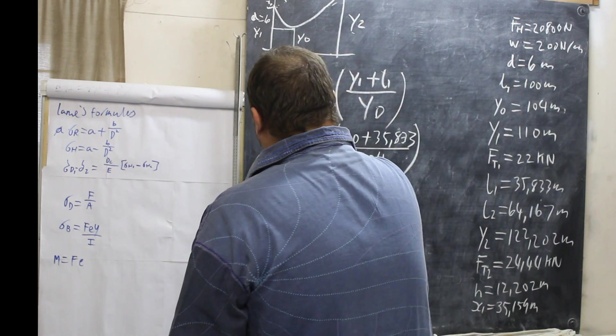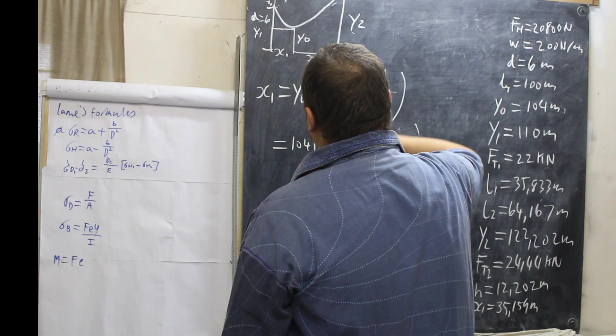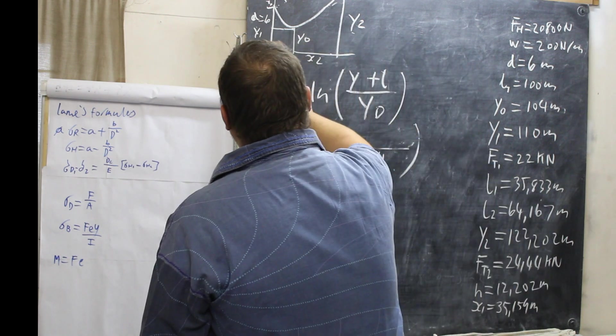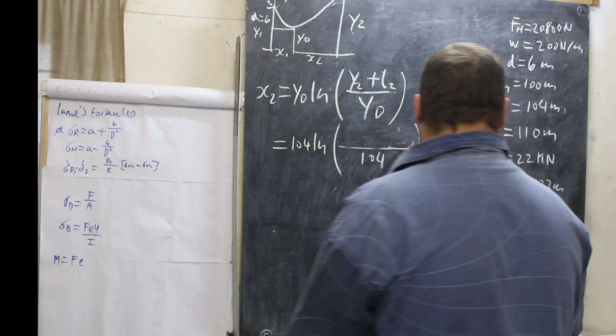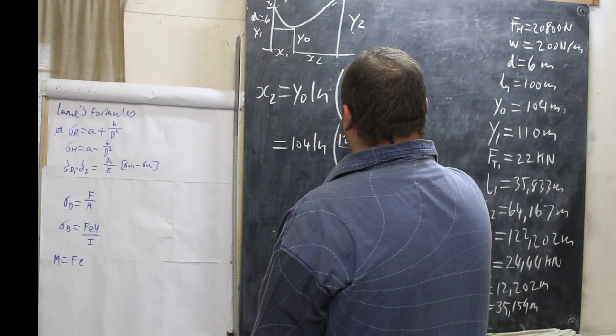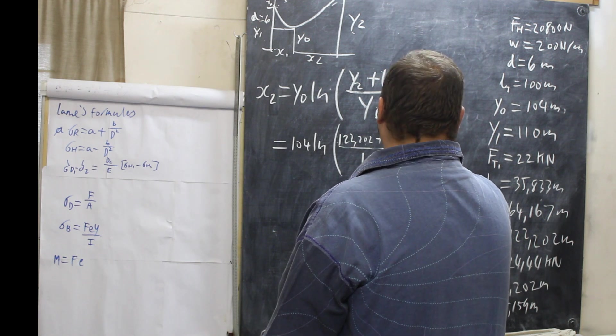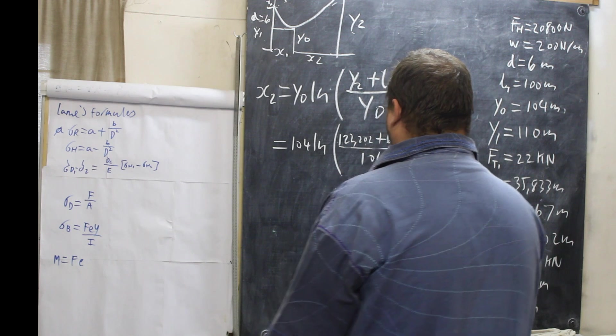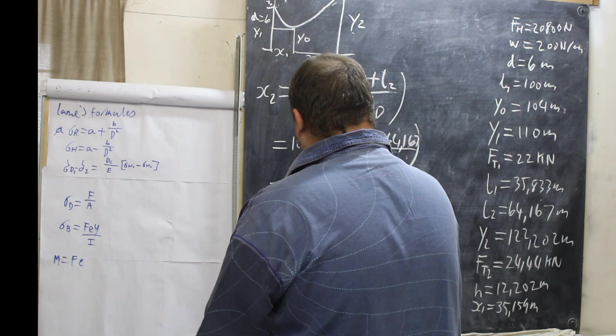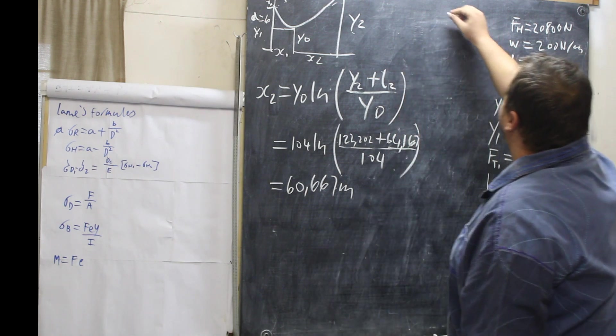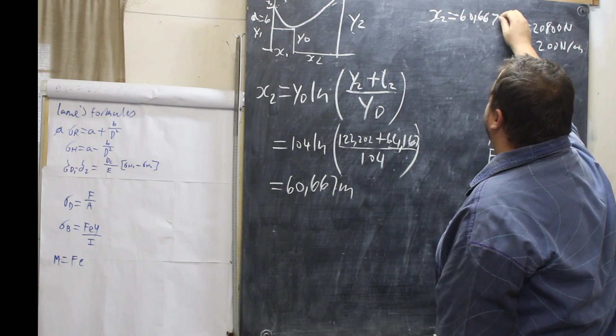X2. Now we're going to go for X2. X2 is exactly the same except all we do is change to the 2, to the 2, and to the 2. Now our top line may be a little bit different so Y2 122.202 plus 64.167. And X2 equals 16.667 meters.